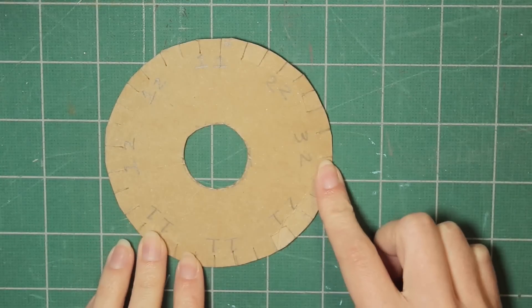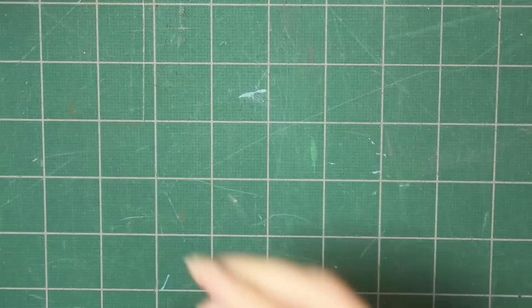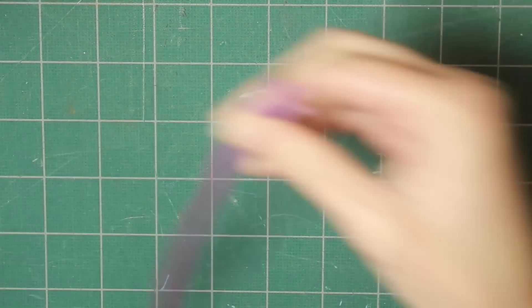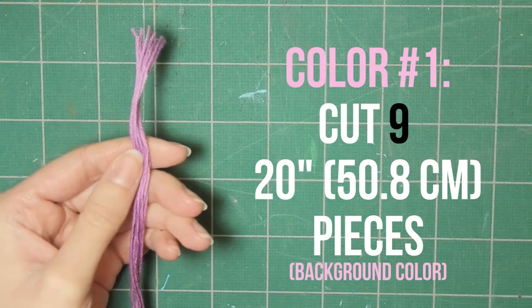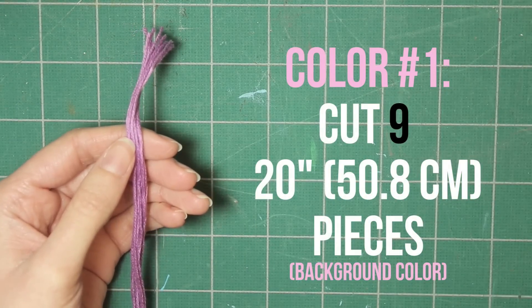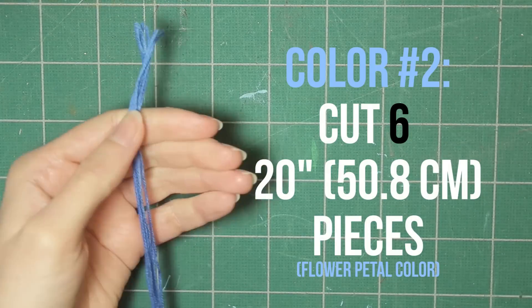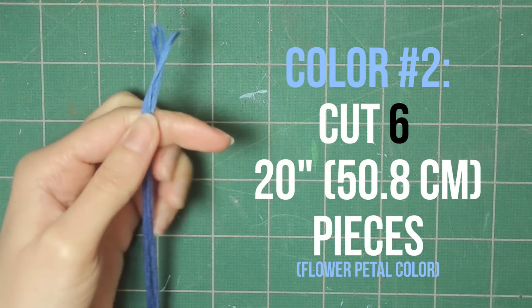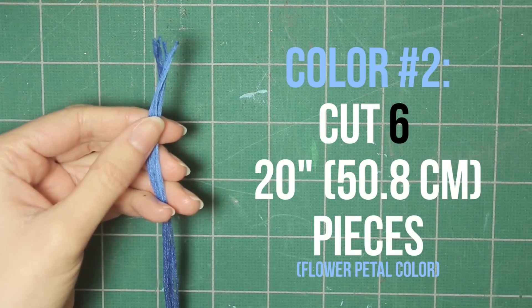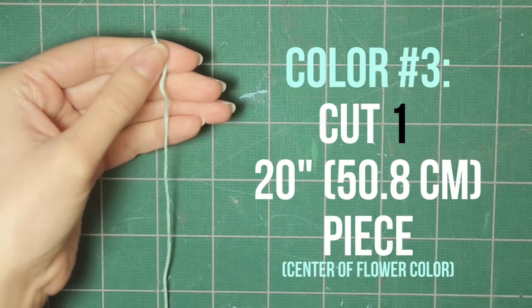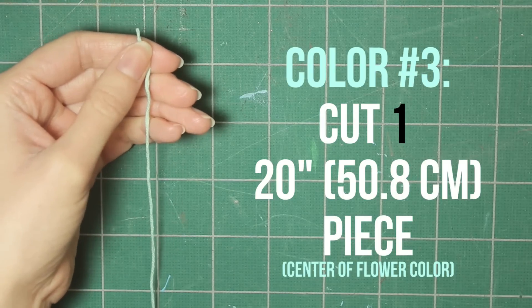Then once you've done that, we can go ahead and start the bracelet. Cut nine 20-inch long pieces of embroidery floss—this will be your color number one. Next, cut six 20-inch long pieces of embroidery floss—this will be color number two. And for color number three, just cut one 20-inch long piece.